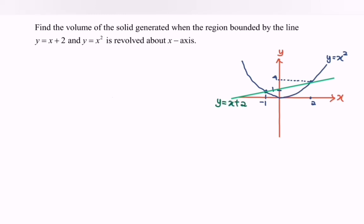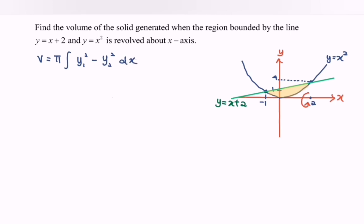Next we find the region bounded by the two curves. The question asks us to revolve about the x-axis, meaning the region rotates 360 degrees about the x-axis. So the formula is V = π times the integral of y₁ squared minus y₂ squared with respect to x.